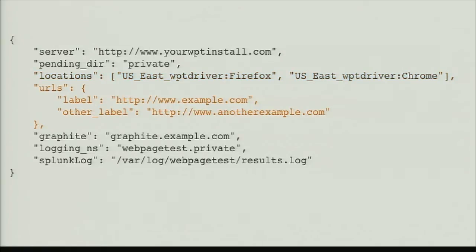Then obviously you set up some URLs. You give it some labels, you tell it exactly which URL to hit, and this can be arbitrarily large — basically specifying exactly what pages you want to hit with your test. Then finally, you set up a different set of logging namespaces and configuration for aggregating the results. In our case, we set up a Graphite server where we're going to beacon the data to. We have a logging namespace for Graphite, and we also have a Splunk log so we can pull this data into Splunk.